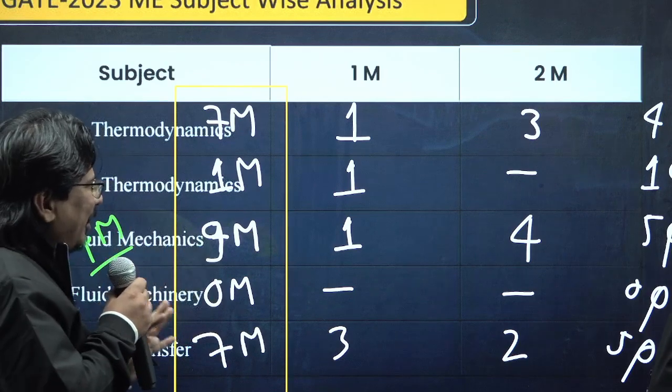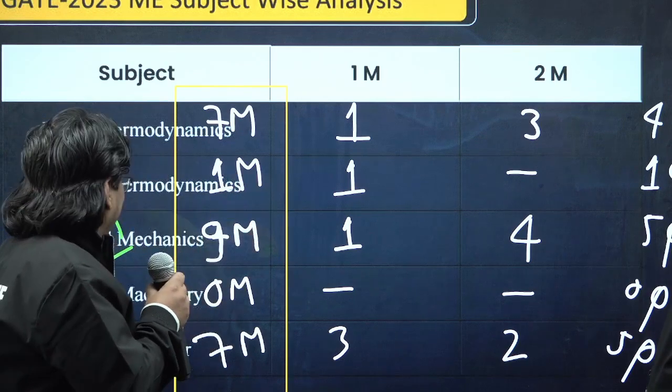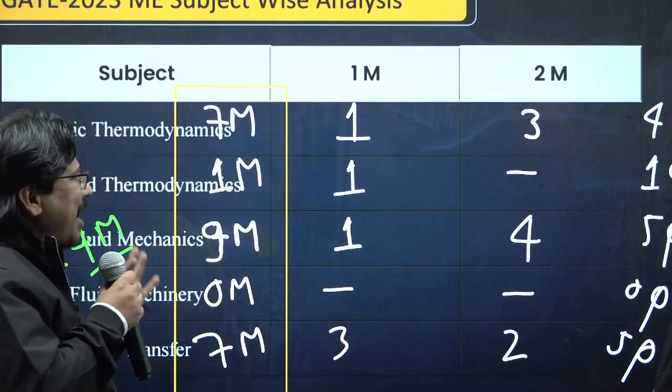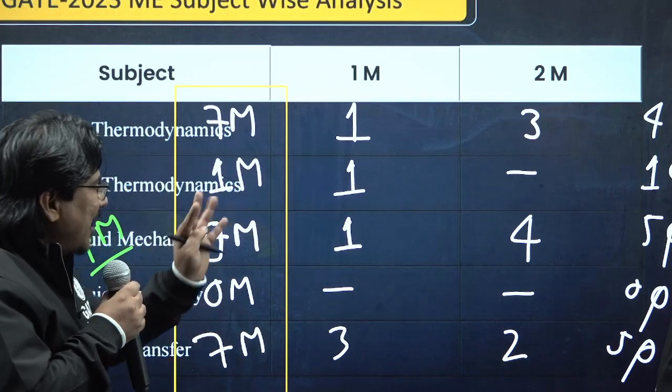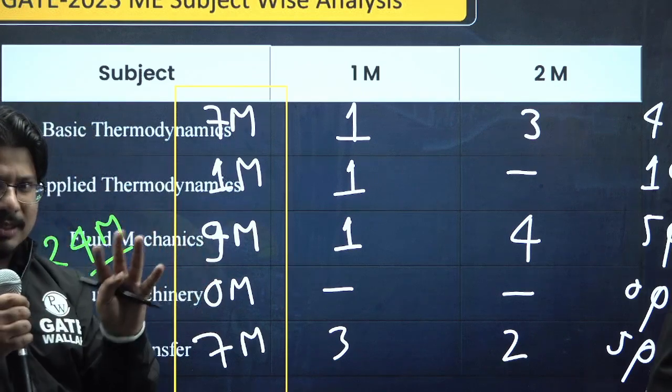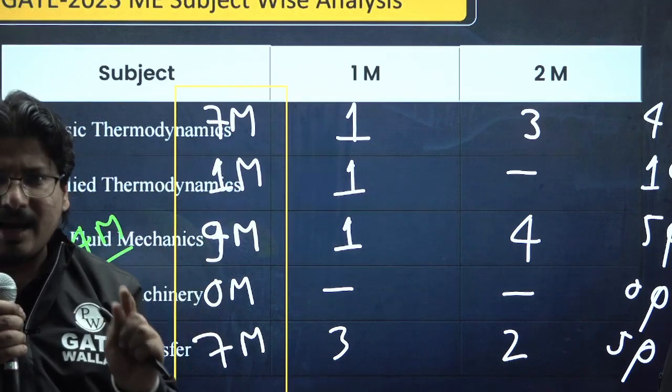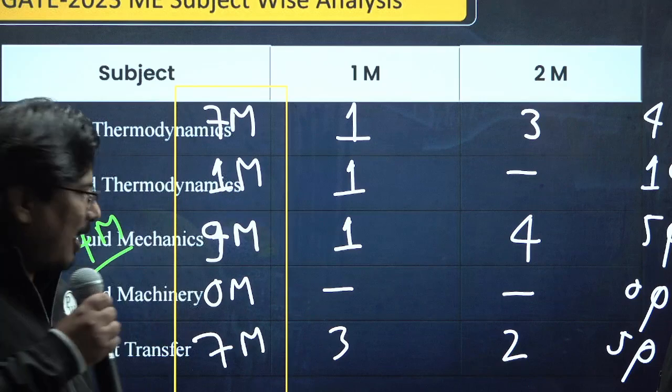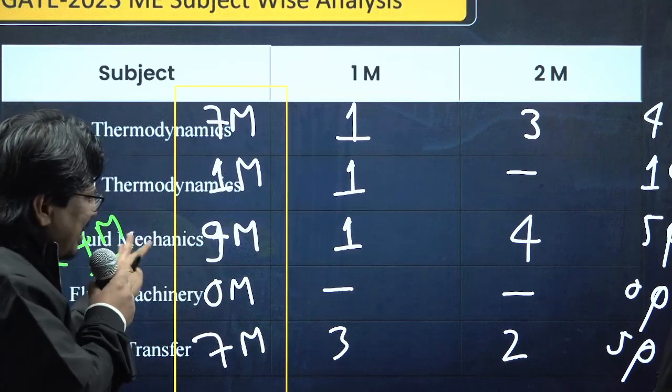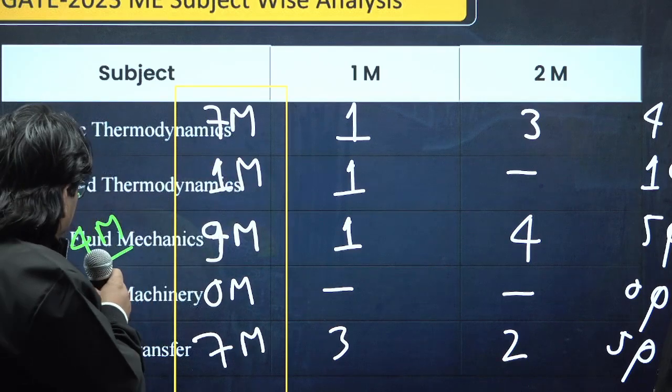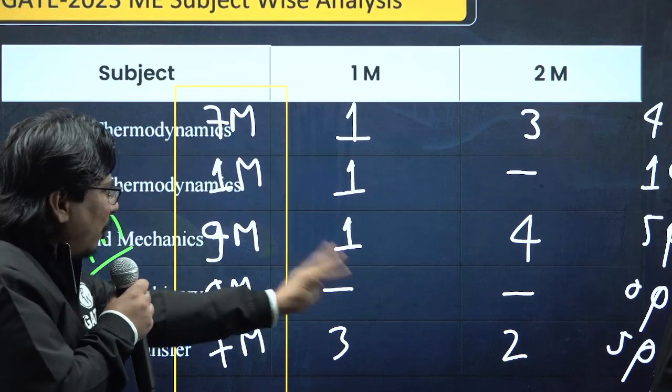Fluid mechanics was heavyweight this time: total 5 questions, 9 marks. Fluid mechanics had very high weightage. Fluid machinery was very disappointing, no question. Heat transfer had 5 questions, 7 marks.